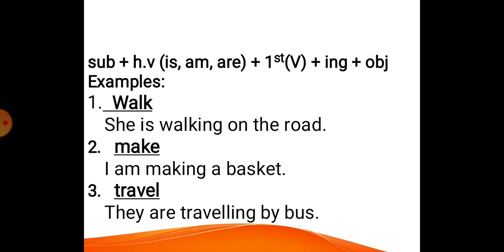Examples: first one, walk. Walk is a first form of verb. According to the first part of the formula that is the subject, you are fully allowed to choose any subject. I have chosen a singular subject that is she. As she is a singular subject, so we will use is with it. The first form of verb is walk. By applying ing with walk we get walking. Then the object is road. So the sentence becomes: she is walking on the road.